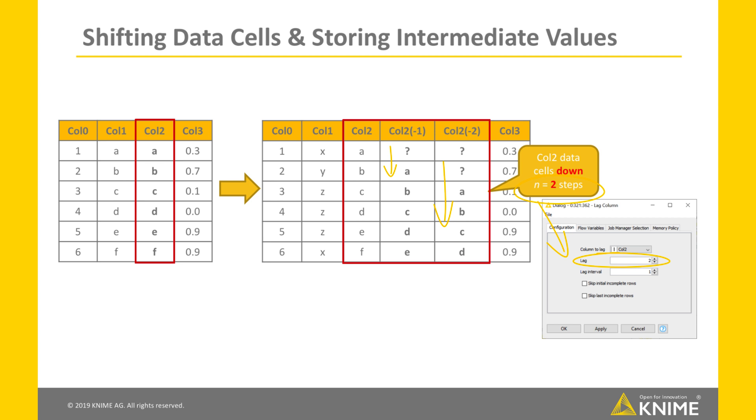Notice that negative values for parameters Lag and Lag Interval are not possible. Basically, the Lag Column node only shifts data cells down.